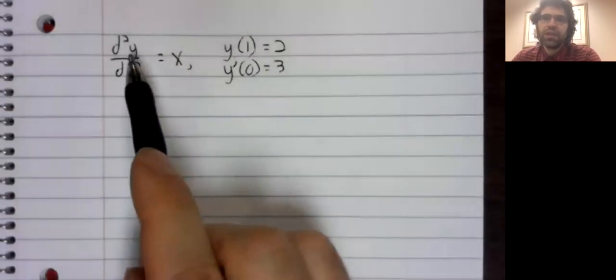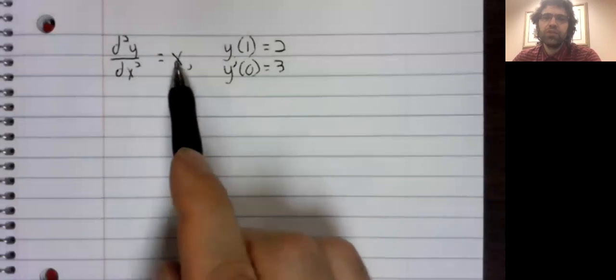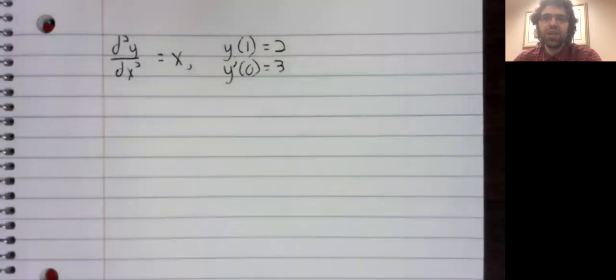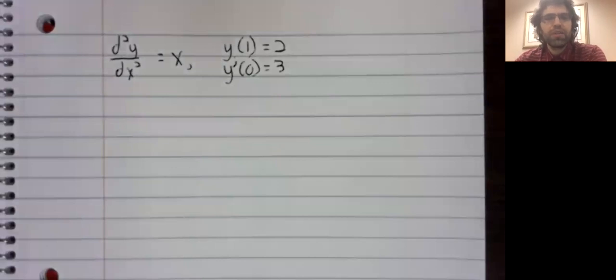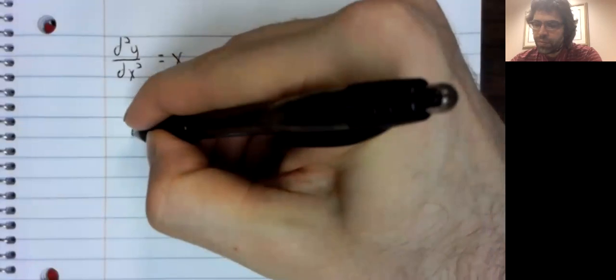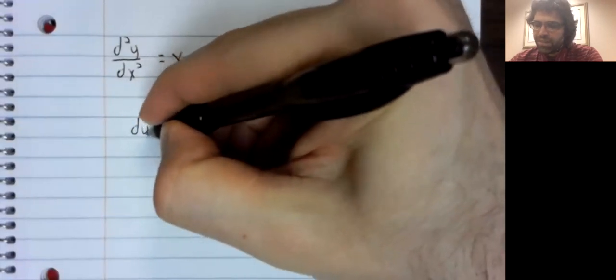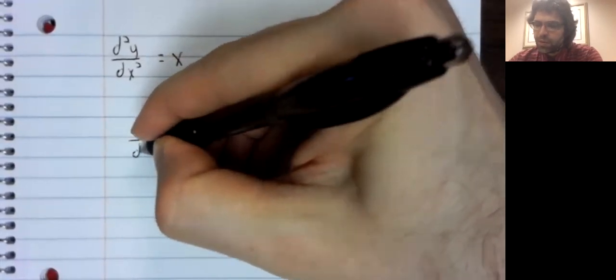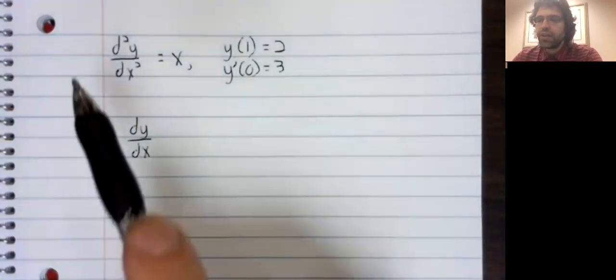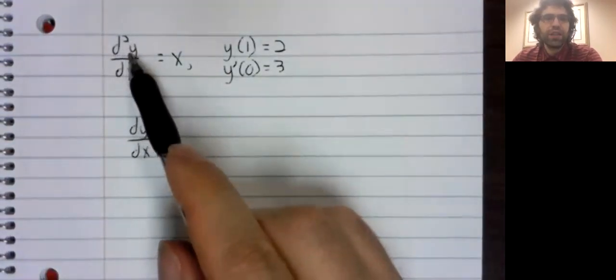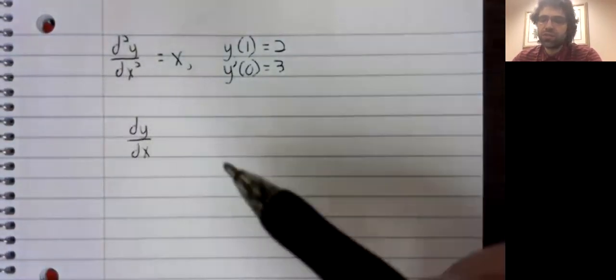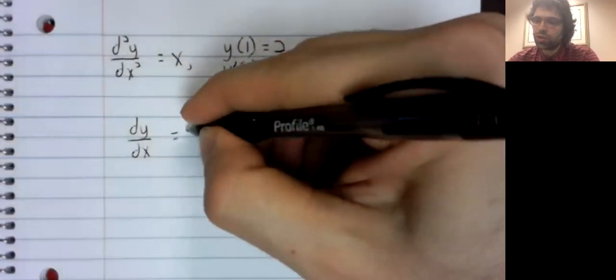If we take this and integrate both sides, the fundamental theorem of calculus says that integration undoes differentiation. So integrating the second derivative gets us the first derivative.